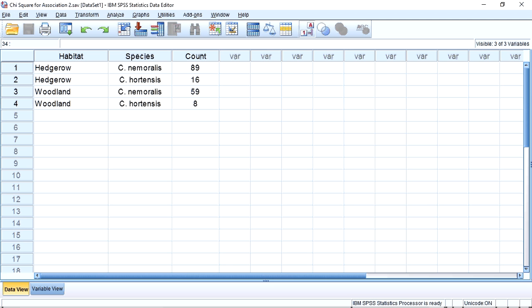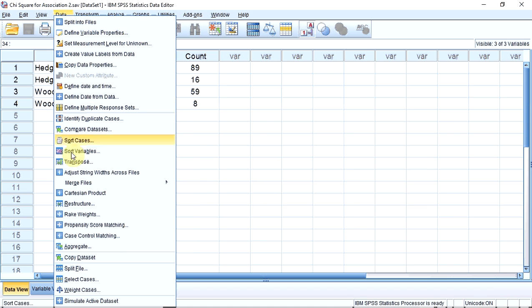I instruct SPSS to recognize that line 1 actually represents 89 observations and line 2, 16 observations, etc., by weighting the data. I do this by going up to the Data menu and click. I go down to Weight Cases at the bottom and click. A window opens.